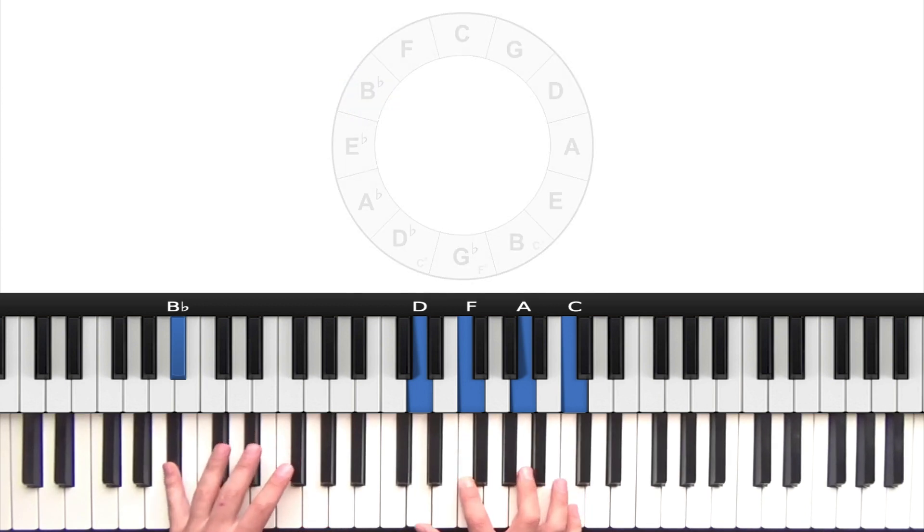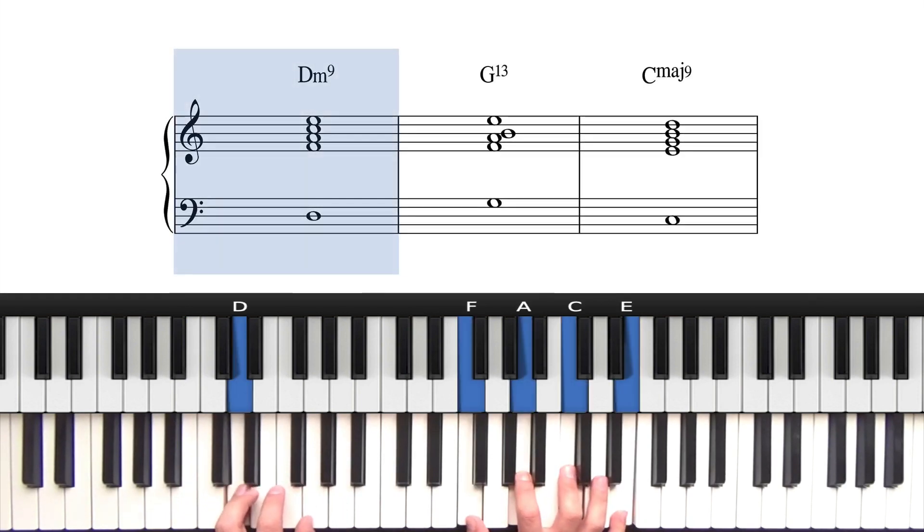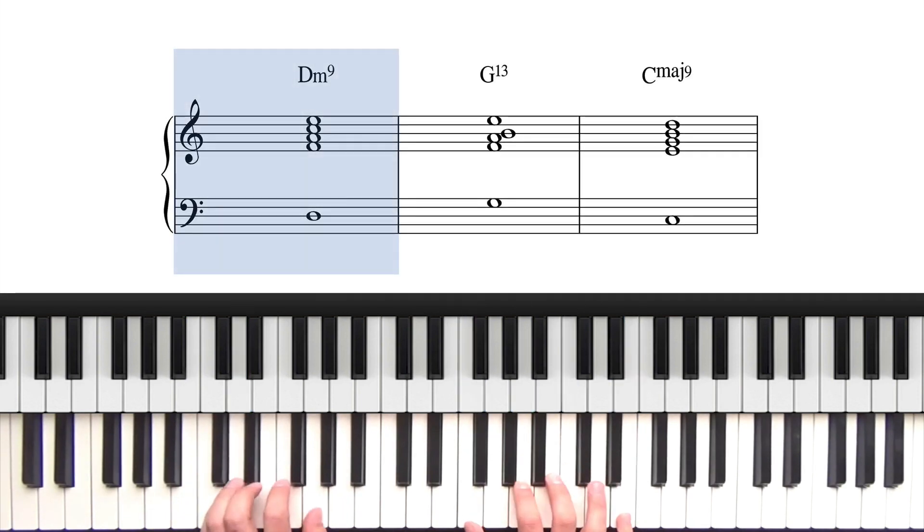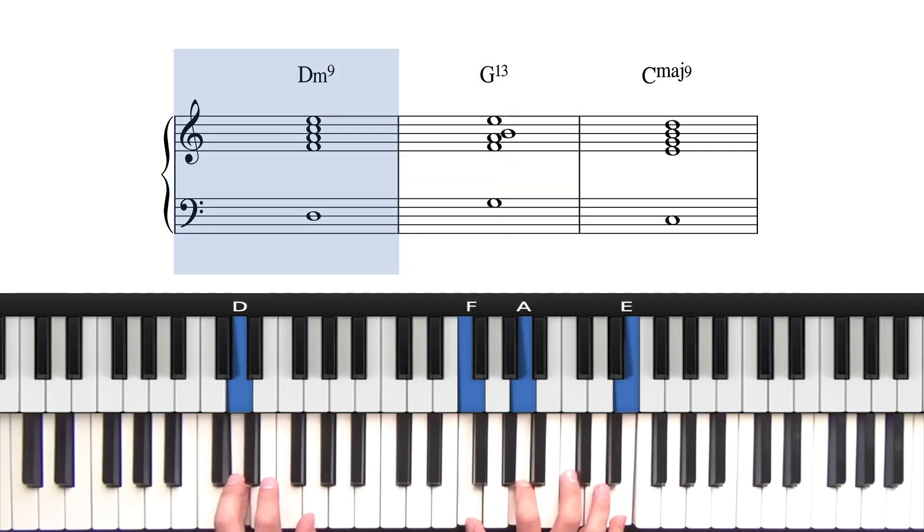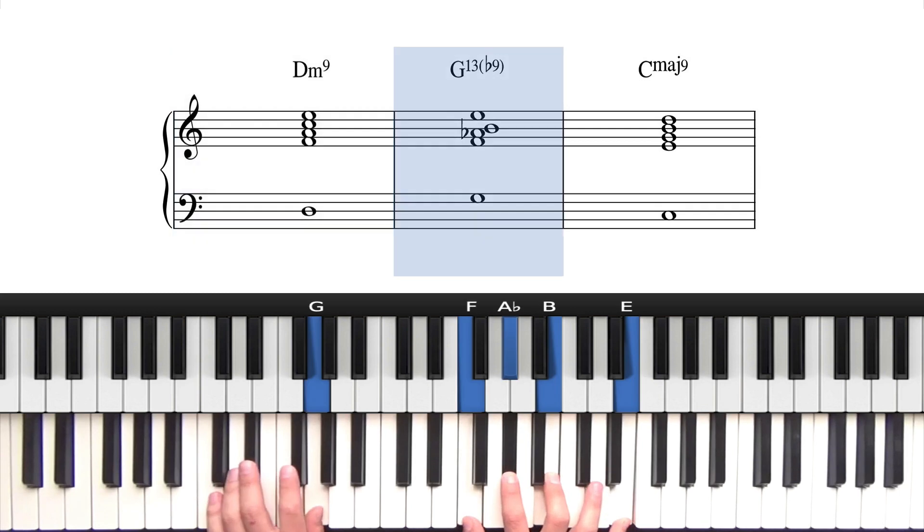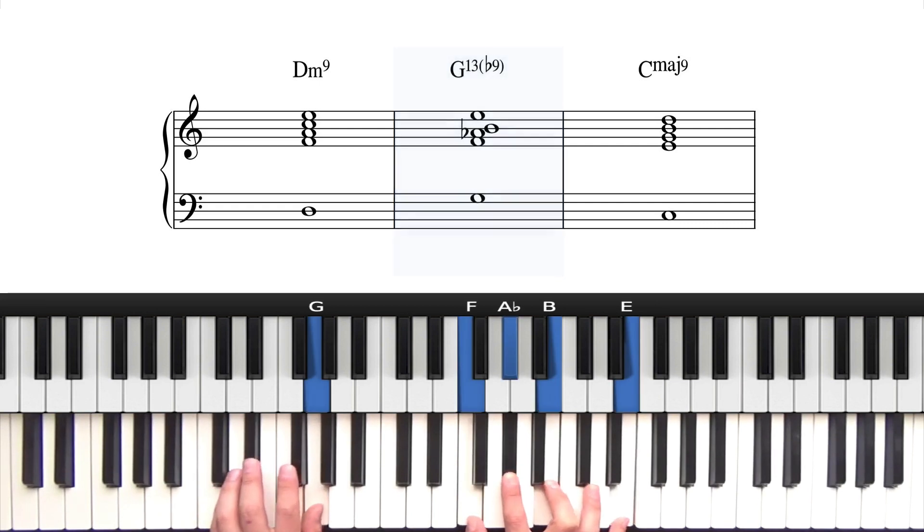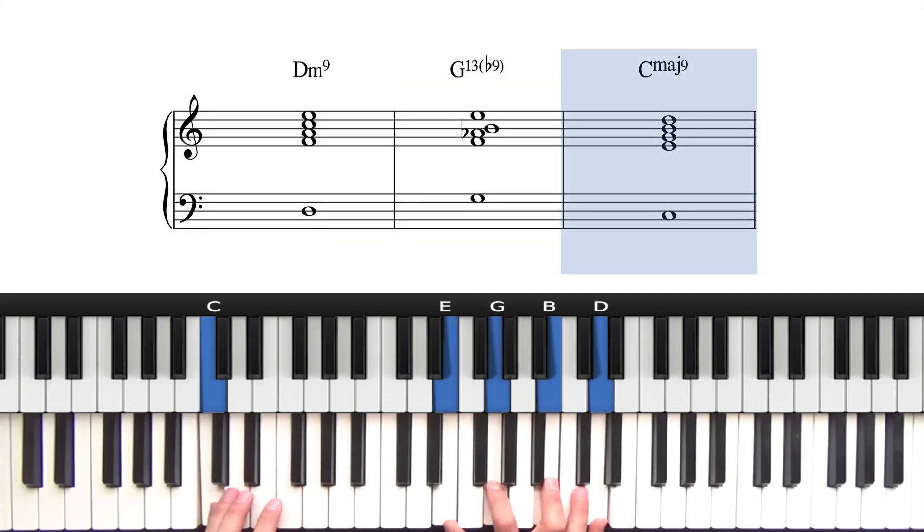And so now we're going to introduce the flat 9. Notice when we take this progression to move from the 2 to the 5 chord, all that changes in our right hand is the flat 7 falls by half a step. Well, if we also drop this note by a half step, we then have the flat 9 over the 5 chord. So listen to the different character that adds. That's unaltered, and then that's altered and into the 1 chord.